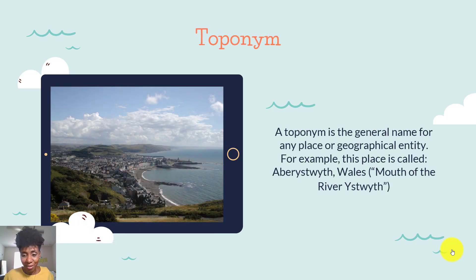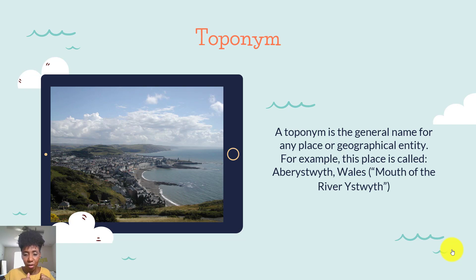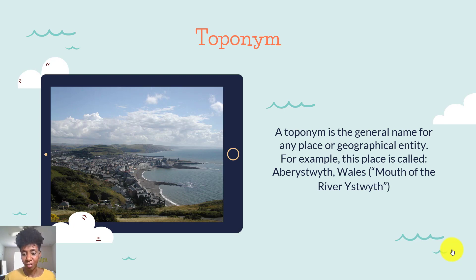Now all places, sites, and situations usually have a certain name, or what we call a toponym. A toponym is the general name given to a geographical place, that site or situation. For example, this place is called Aberswynst — I'm not going to try to say that. You say that five times fast. But you get it.